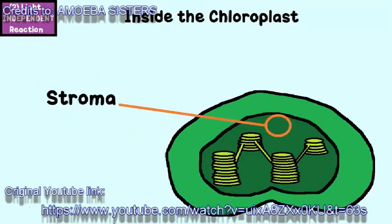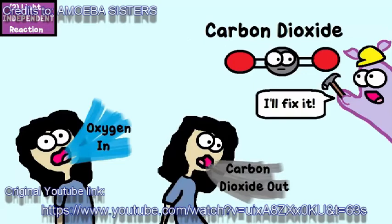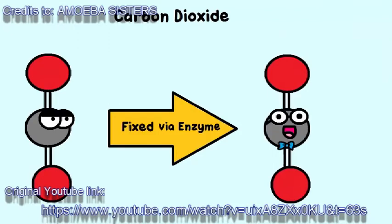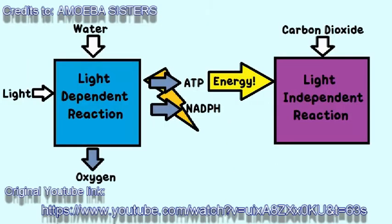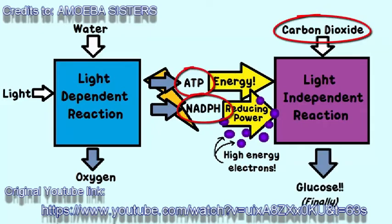The stroma is a fluid outside of the thylakoid. In this reaction, carbon dioxide must be fixed. By fixed, I mean that with the additional help of a major enzyme, the inorganic carbon dioxide is changed to a more usable organic form. The ATP from the light-dependent reaction helps supply energy. And the NADPH from the light-dependent reaction supplies reducing power — that is, it helps add high-energy electrons to this process. So in a very complex series of pathways, the fixed carbon dioxide, the ATP, and the NADPH are used to make a product that can ultimately be converted into glucose.